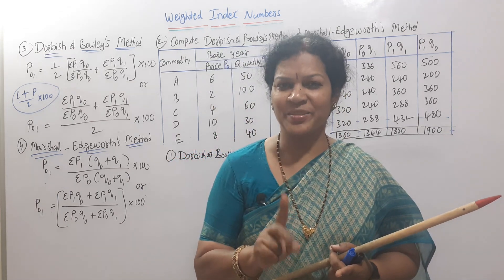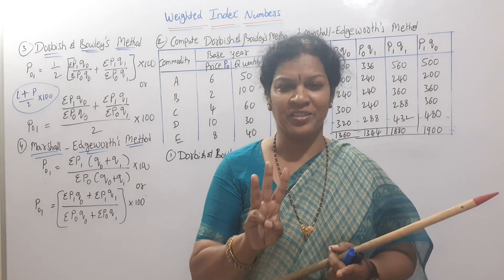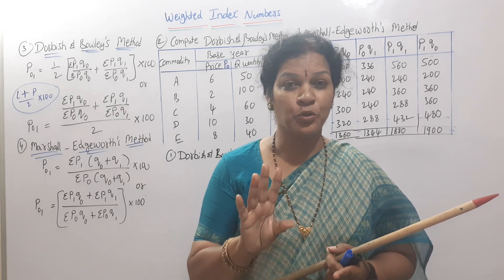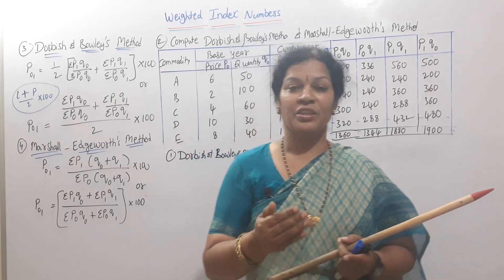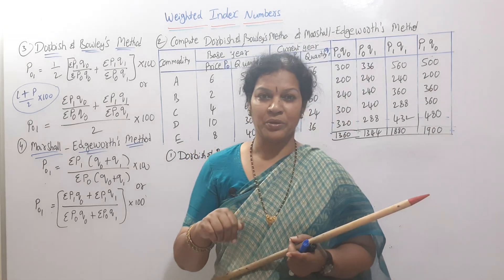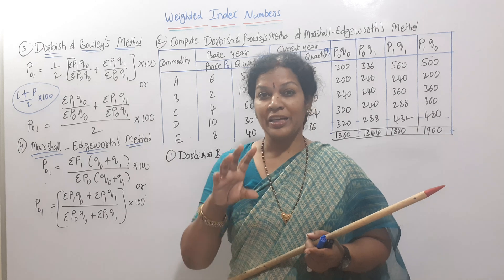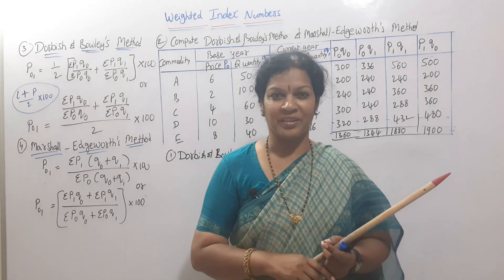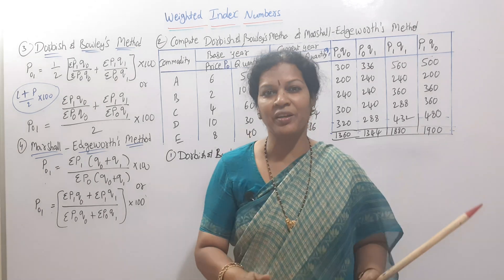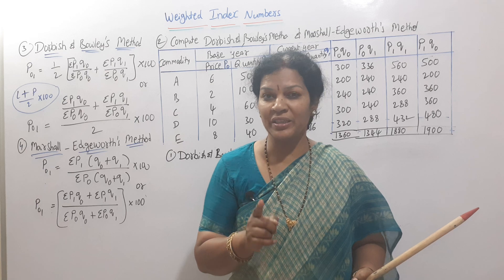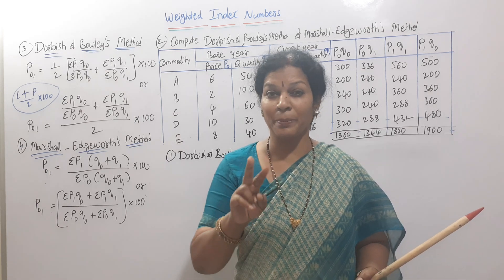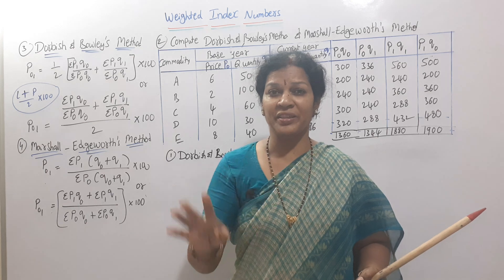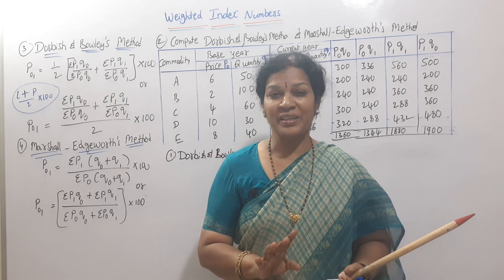Today we will see two more methods, totaling five weighted arithmetic mean methods. These two methods are based on Laspeyres and Paasche formulas. That's why in the last class I told you Laspeyres and Paasche are the base for the rest of the index numbers. Now let's learn the formulas and then work out problems.